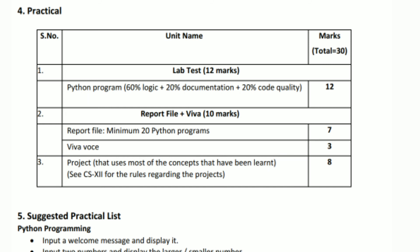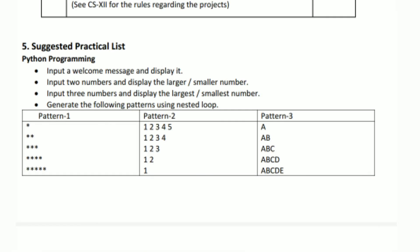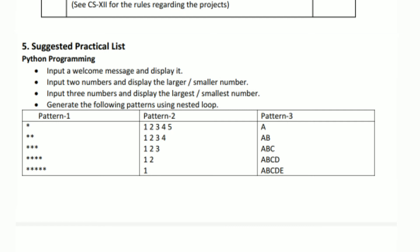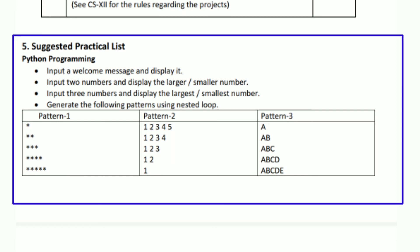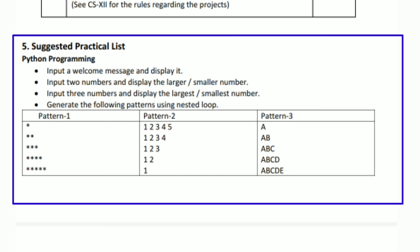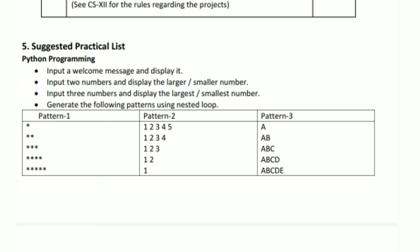This is the complete syllabus of class 11th. Then point number 5 is the practical list. Some practicals are being suggested that you have to do. Here three programs are given at the top, and then finally patterns 1, 2, and 3. These are the programs suggested to you. Many more programs are given in the computer book which you have to practice a lot, because programming is the backbone of this whole Python system. So you have to do a lot of programming. And then finally, this is the syllabus given by CBSE which I have explained to you all.